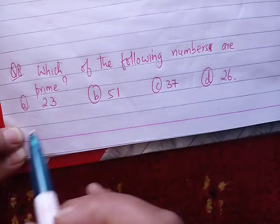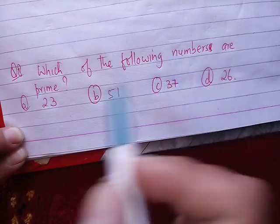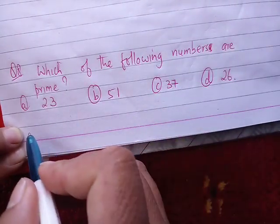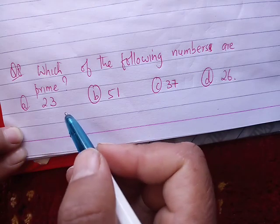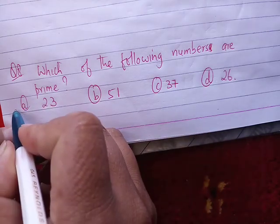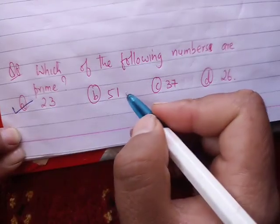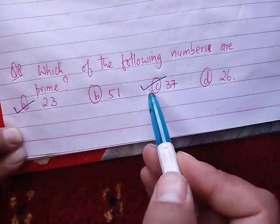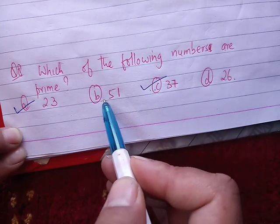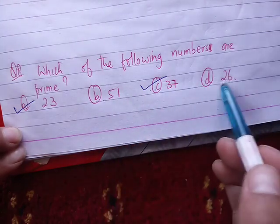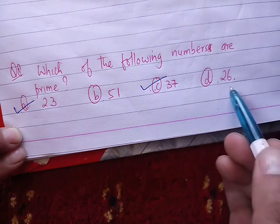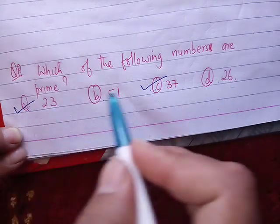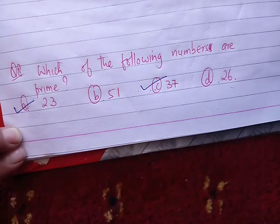Question number eight: Which of the following numbers are prime? Prime numbers have only two factors. The prime numbers from the list are 23 and 37. The first number, 51, has more factors. The second is 26, which is even and divisible by 2, so it's not prime.